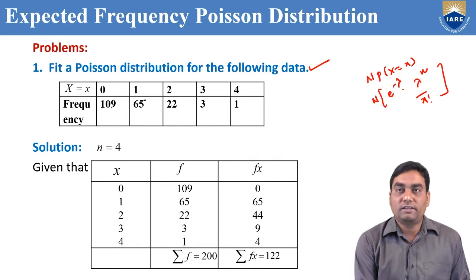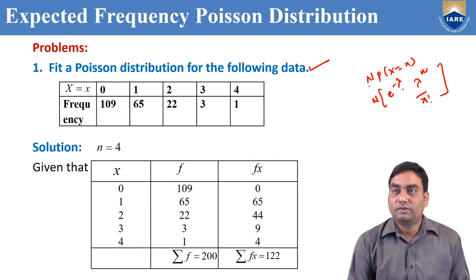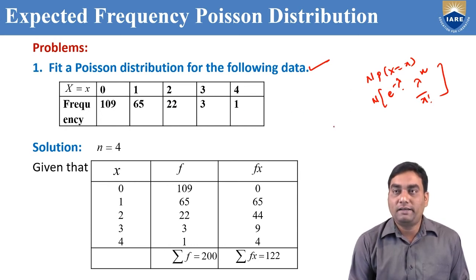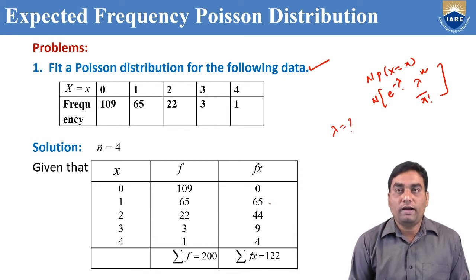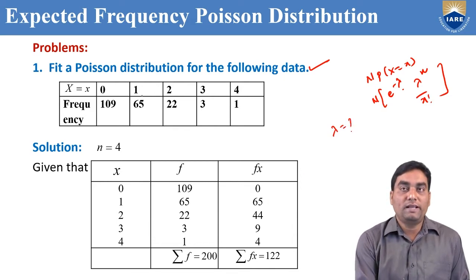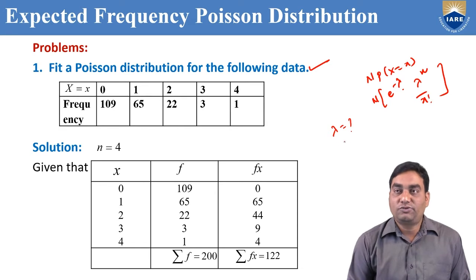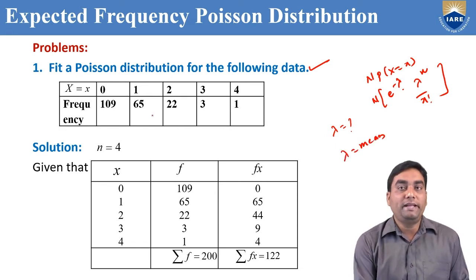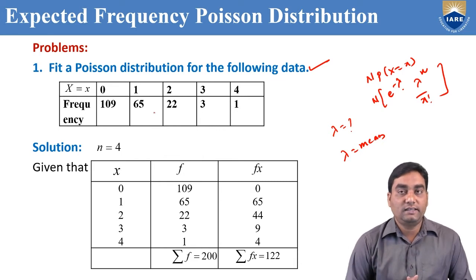The small x values given are 0, 1, 2, 3, 4. Capital N is found by adding all the frequencies. We do not know the lambda value, so we need to find it from the table. Lambda means mean. How to find the mean if you know x and frequency? You know that mean = Σfx / Σf.